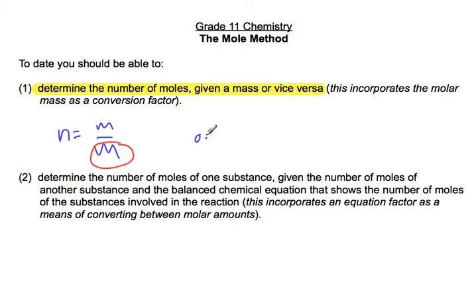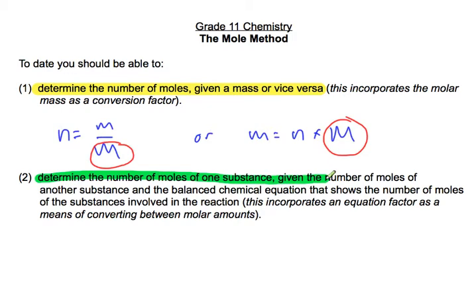What if I'm given a number of moles and I want to find a mass? I can do that as well. Mass equals number of moles times molar mass — the molar mass is our conversion factor. Using the molar mass as a conversion factor is something you've done already. The other thing you have to be able to do is determine the number of moles of one substance given the number of moles of a different substance in that reaction, in that chemical equation. To do that, we use equation factors.